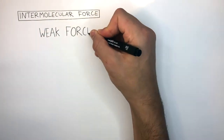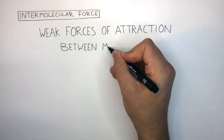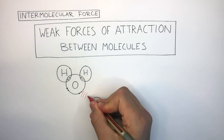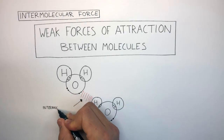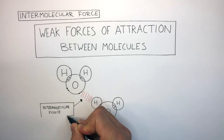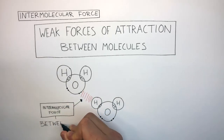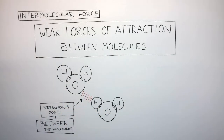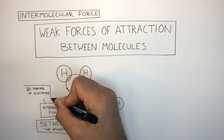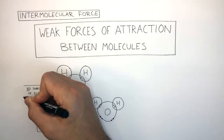Intermolecular forces are weak forces of attraction between molecules. Here are two water molecules, represented by dot and cross diagrams, showing the outer electrons only. These red lines represent weak intermolecular forces. You must remember that intermolecular forces exist between the molecules, and there is no sharing of electrons — it is just a weak force of attraction that exists between molecules.